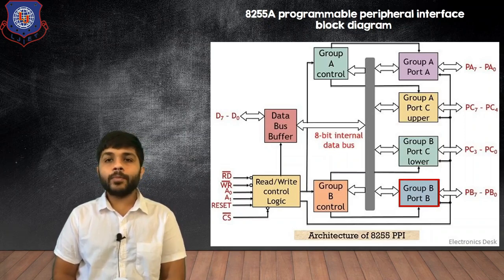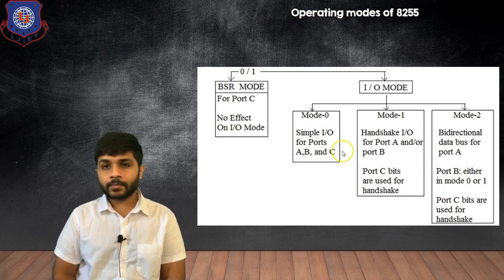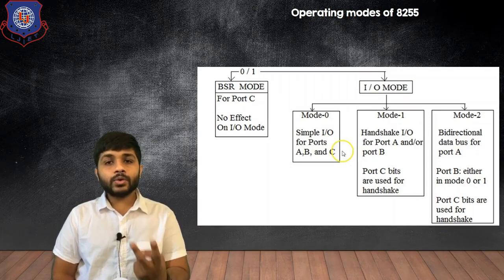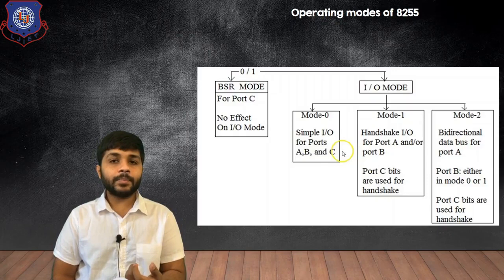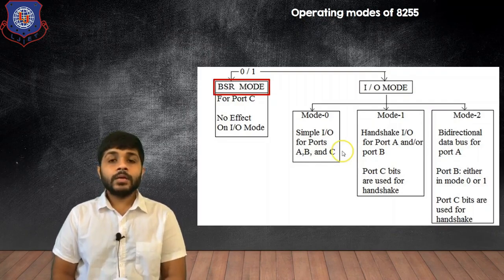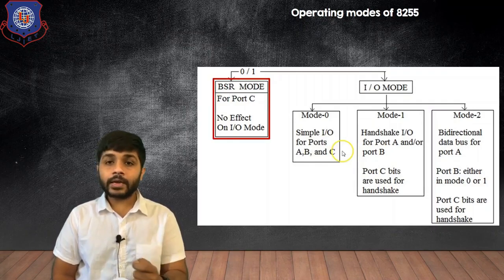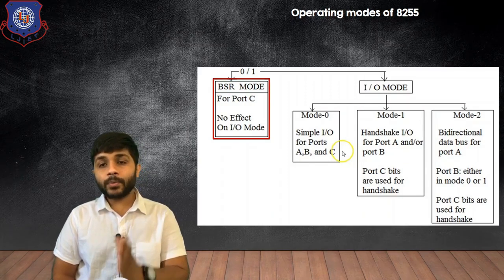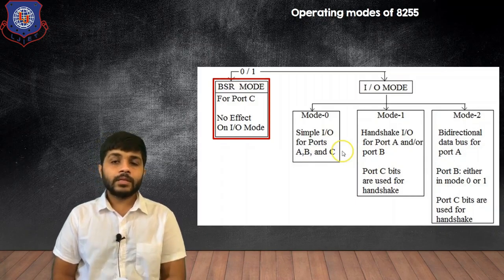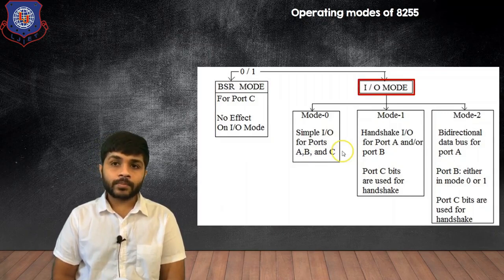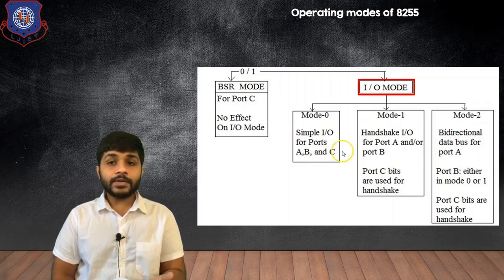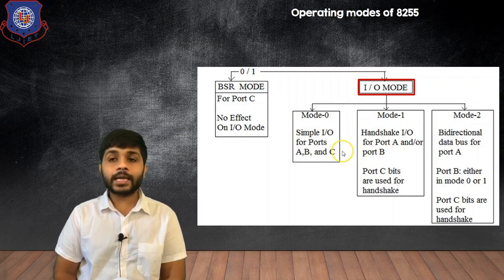Now let's see the operating modes of the 8255A. There are two basic modes in which the 8255A can work. The first is the bit-set-reset mode, which is specifically for Port C — when the 8255A is set to this mode, all the bits of Port C can be either set or reset. The second mode is the input-output mode, which is further divided into three modes: Mode 0, Mode 1, and Mode 2.